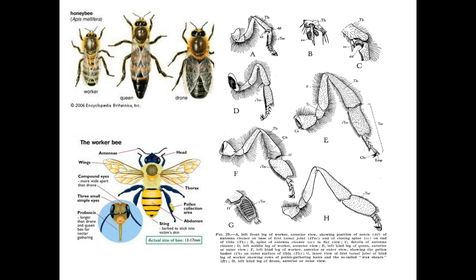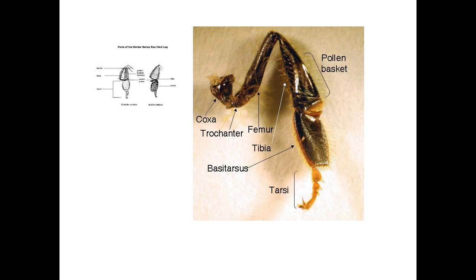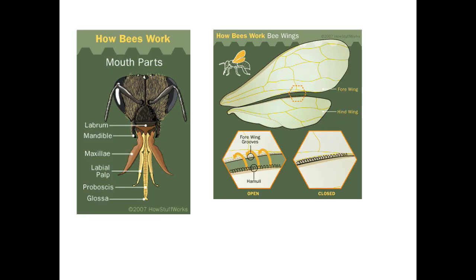Mandibles are suited for crushing and shaping wax for building combs, not for biting. Mandibles are used to crush pollen and nectar content and to shape the wax. Wax is the inner content of a honeybee nest — honeybee nests are constructed from wax. Legs are specially modified for pollen and nectar collection; pollen is mainly collected by the legs, and nectar is collected by the mouthparts.